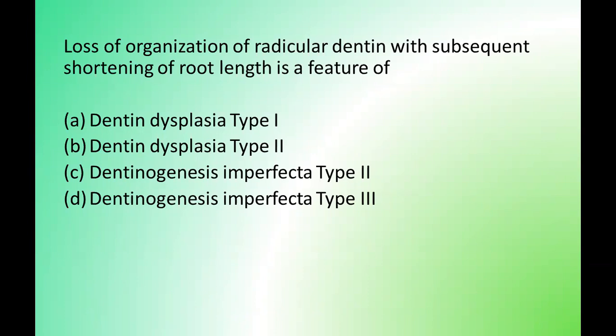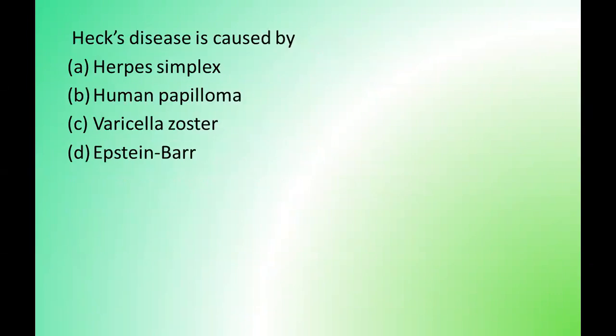Next question: loss of organization of radicular dentine with subsequent shortening of root length is a feature of which condition? Options are: dentine dysplasia type 1, dentine dysplasia type 2, dentinogenesis imperfecta type 2, dentinogenesis imperfecta type 3. The correct answer is option A — dentine dysplasia type 1.